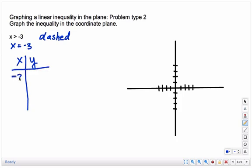X always has to be negative 3, but y could be anything. So it could be negative 2, 0, and 2.